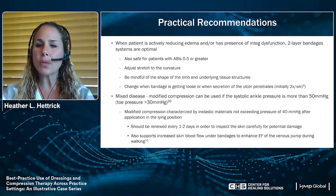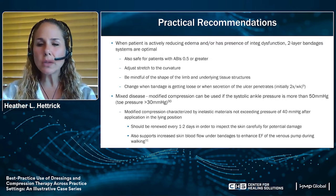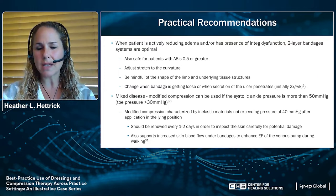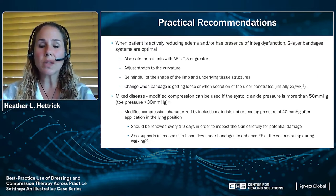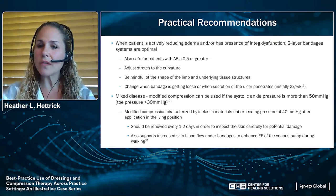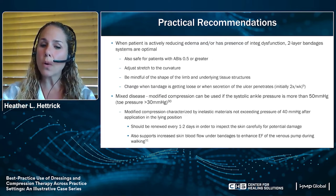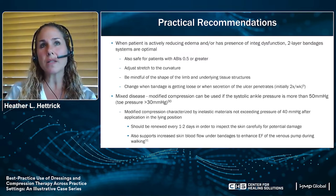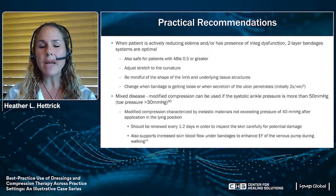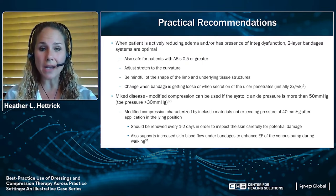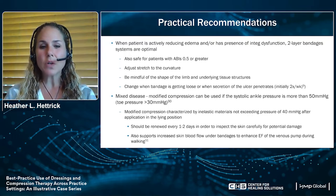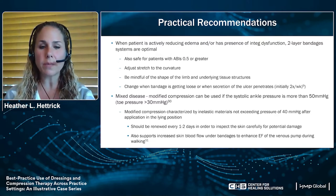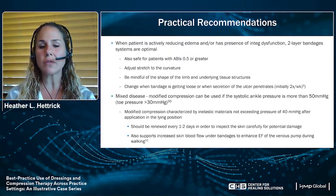When a patient is actively reducing edema or has integumentary dysfunction, two-layer bandage systems are generally optimal. For patients with mixed disease, modified compression can be used if the systolic ankle pressure is more than 50 mmHg or a toe pressure greater than 30 mmHg. Some patients — such as those with diabetes or calcified vessels — may have an artificially high ABI, so a toe brachial index is recommended. The vessels of the toes do not calcify like the larger vessels of the lower leg, so a toe pressure greater than 30 indicates it's safe to use compression.